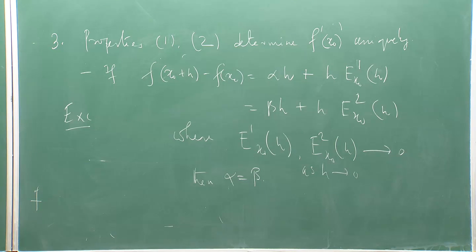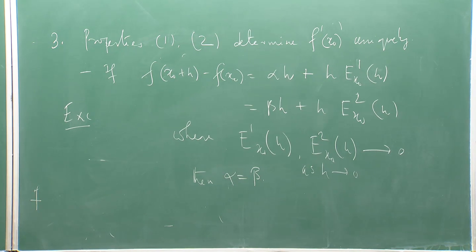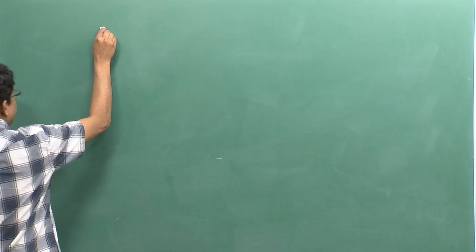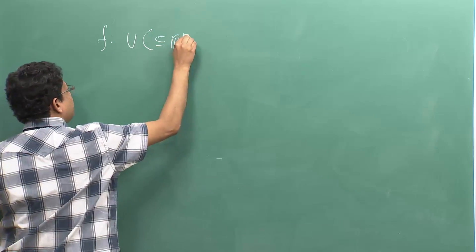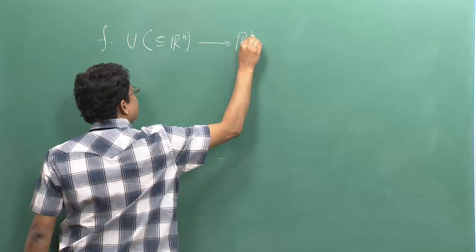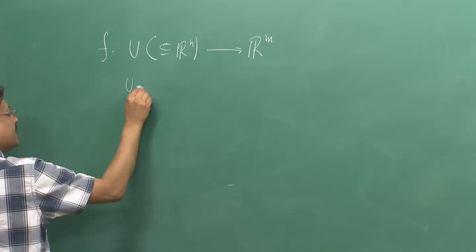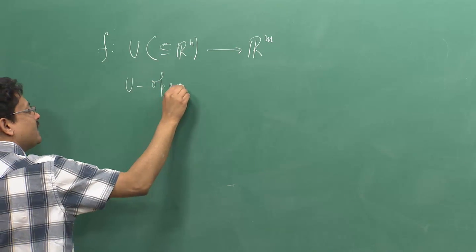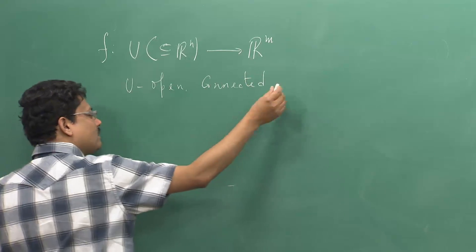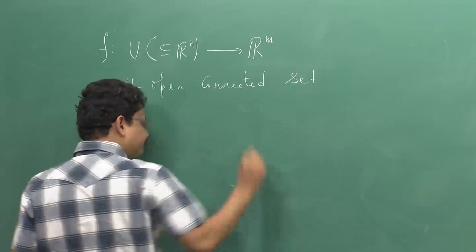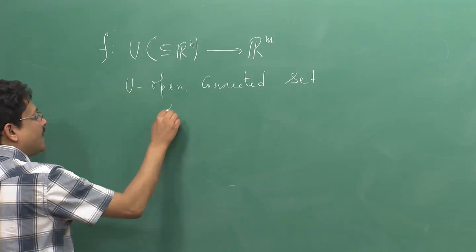Now I will write the correct definition. Remember that we have discarded the other two — the first one completely discarded, the second one with a reservation. So let us see what the correct definition is. Here is my set u, and as I said, unless otherwise specified, u is an open connected set, and I have x naught in u.